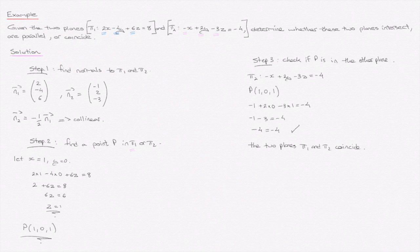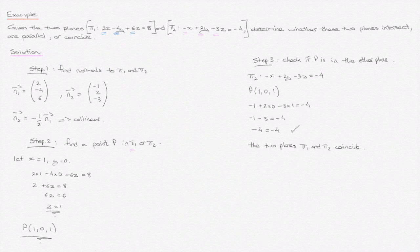The two planes pi1 and pi2 coincide, meaning they share all the same points. To review: step 1, find the normals; step 2, find a point in one of the planes; step 3, check if that point is also in the other plane. If it isn't, the planes are parallel; if it is, the planes coincide.